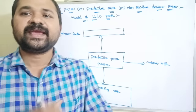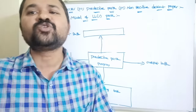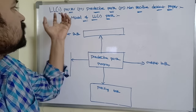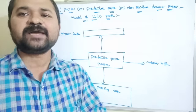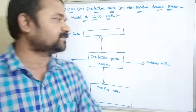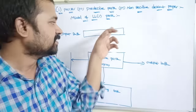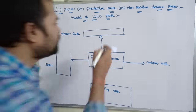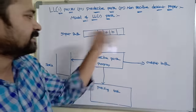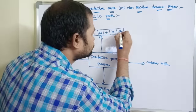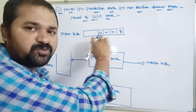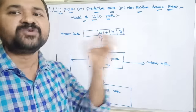Input buffer stores the input string that is to be parsed. The corresponding tokens or input will be stored in the input buffer. For example, if the input is a plus b, then a, plus, and b will be stored in cells, and the last cell of the input buffer is dollar. Initially, dollar is stored, and after that the corresponding input string is stored.